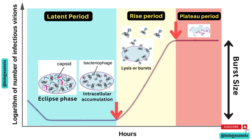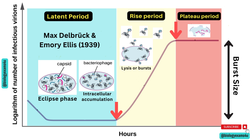This one-step growth curve is a fundamental concept in virology that helps researchers observe and quantify the viral replication cycle in a controlled environment. This model was first developed by Max Dahlberg and Emory Ellis in 1939 using T4 bacteriophage and E. coli as host. In that experiment, phage T4 has a burst size of around 100 particles per infected E. coli cell.